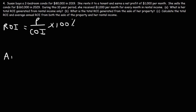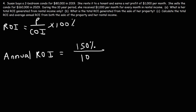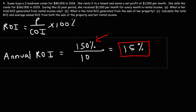If we wanted to calculate the annual ROI for the rental income, it's the 150% earned over 10 years divided by 10, so her average annual ROI would be 15% per year. But the answer for Part A is 150%, since we were looking for the total ROI generated from rental income only.